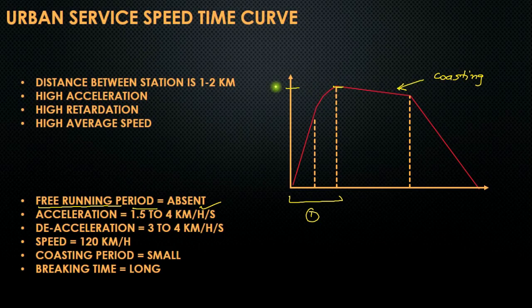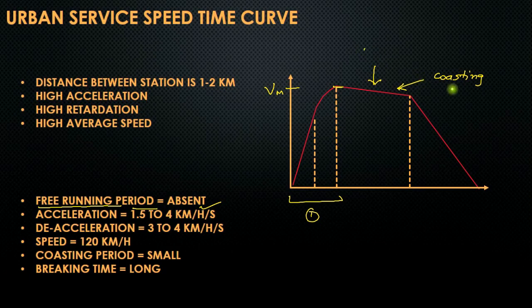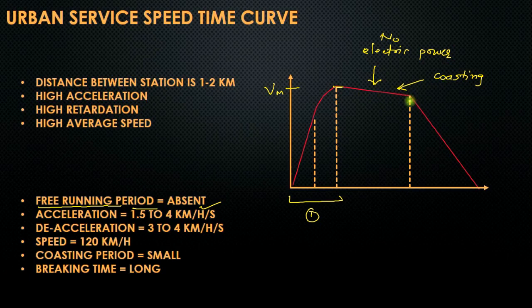After going to its maximum speed Vm, the train starts to decelerate because it is about to reach its destination. The main distance is covered without drawing any further power — this is the coasting period, where the electric locomotive is not drawing any electrical power from the supply.